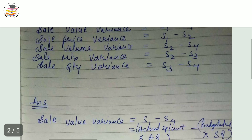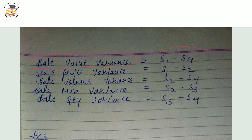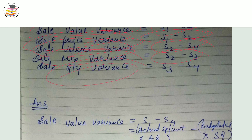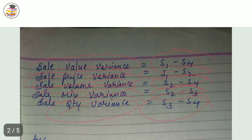The formulas are: sale value variance = S1 minus S4; sale price variance = S1 minus S2; sale volume variance = S2 minus S4; sale mix variance = S2 minus S3; sale quantity variance = S3 minus S4. To remember: it goes 1–4, 1–2, 2–4, 2–3, 3–4. Compare this with material and labor variances — the pattern is similar.